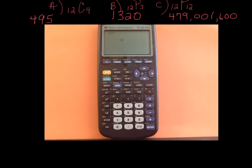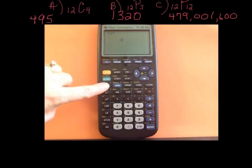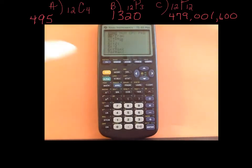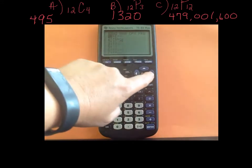In order to do these on the calculator, you have to put in the two numbers — the N and the R value. I'm going to do part A. The first thing you have to do is type in that N value, so I already have 12 typed in. Now for the probability keys, you have a key that says MATH right underneath that green key. Hit MATH, a menu comes up, and all the way over you see PRB — those are your probability functions.